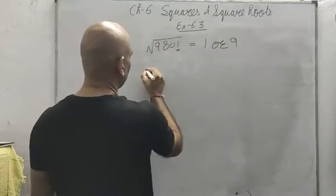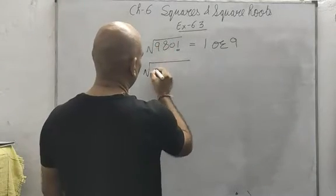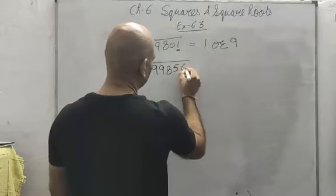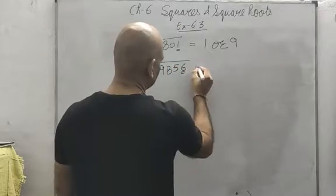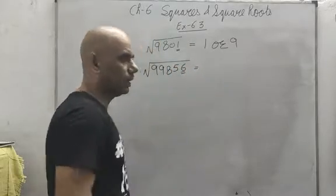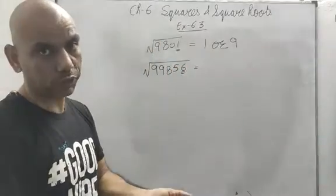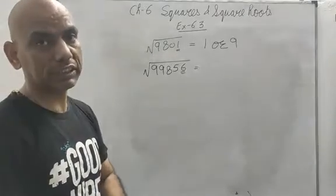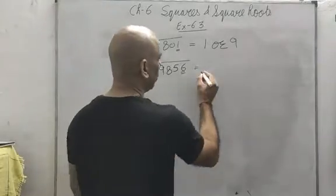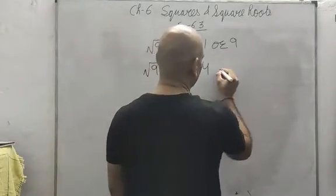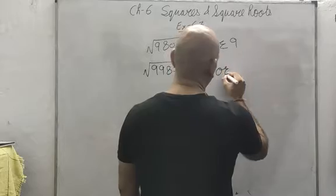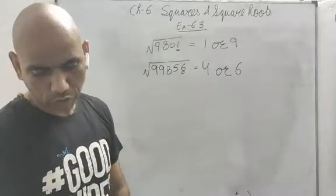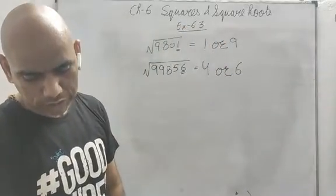Let us look again. 99856 — 6 appears in the square of 4 (4² = 16) and in the square of 6 (6² = 36). So the unit place will be either 4 or 6.